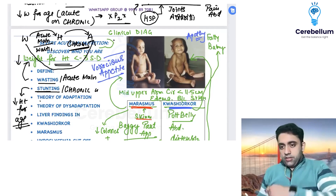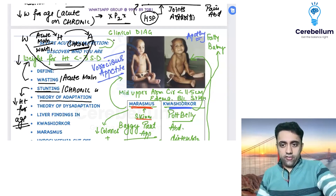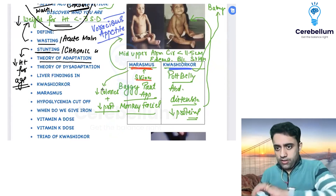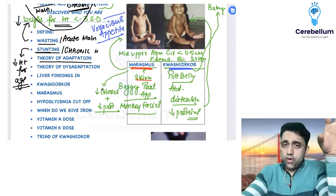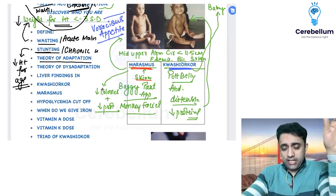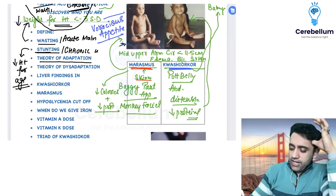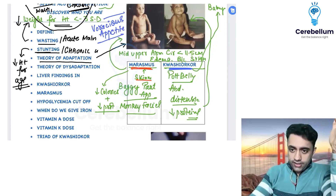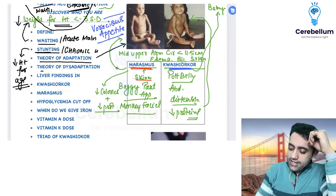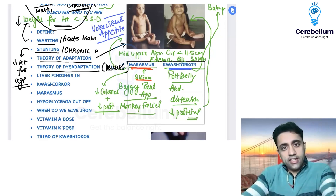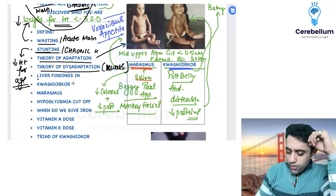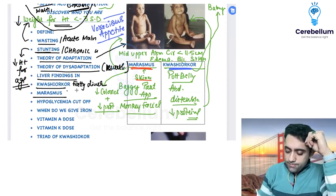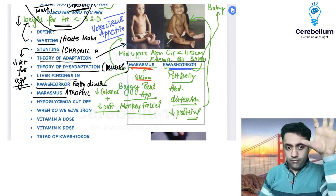Marasmus follows the theory of adaptation — the child stops eating, breaks down fat and muscle, and goes thin. Kwashiorkor follows the theory of maladaptation — the child also doesn't get enough to eat but becomes fatty. The liver finding in Kwashiorkor is a fatty liver, while in Marasmus it is an atrophic liver.